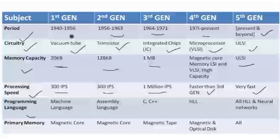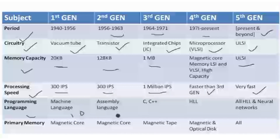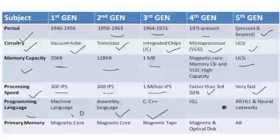Next is programming language. In the first generation we used machine-level language, which means it uses only ones and zeros. In the second generation we used assembly-level languages. In the third generation we used early high-level languages such as C and C++.